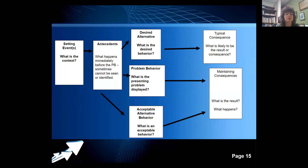Sometimes we can't see or identify the antecedent, so we identify what the desired alternative behavior is. We look at the problem behavior that is being displayed, and also identify an acceptable alternative behavior — if we can't achieve the total desired outcome, what is an acceptable alternative? Once we get the desired alternative, what is the typical consequence? We often quit giving a consequence once the student does the behavior, whereas before we were giving consequences like nagging or cajoling. We have to look at what is maintaining the consequences of the problem behavior and look for that pattern in the ABCs.